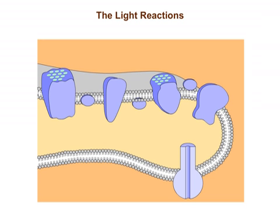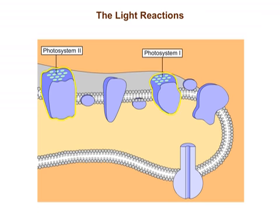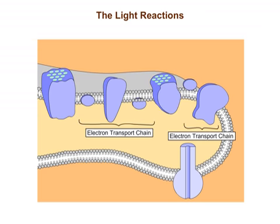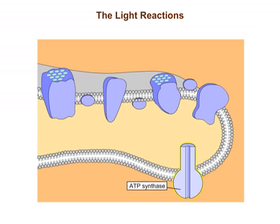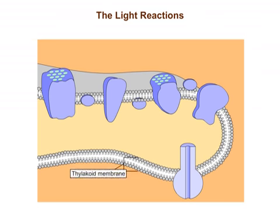The key components of the light reactions of photosynthesis are the two photosystems, two electron transport chains, and ATP synthase. These parts are embedded in the thylakoid membranes of a chloroplast.